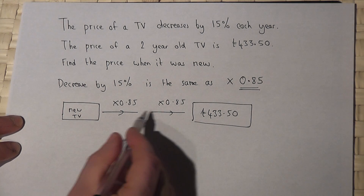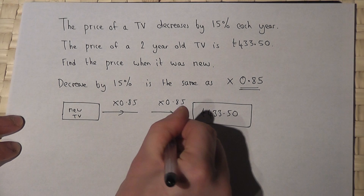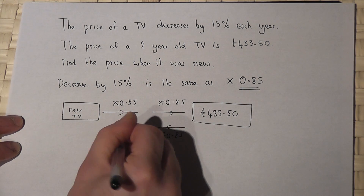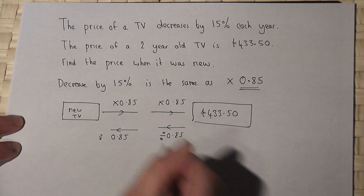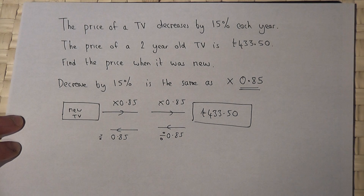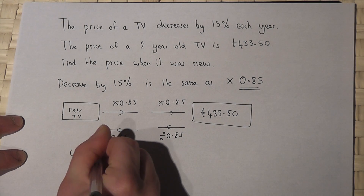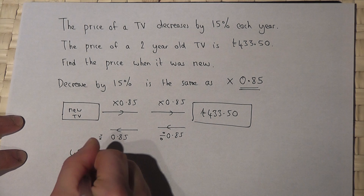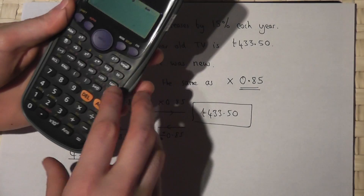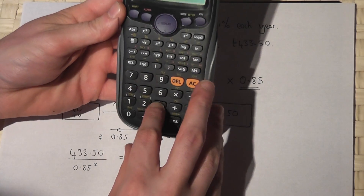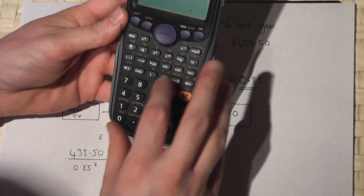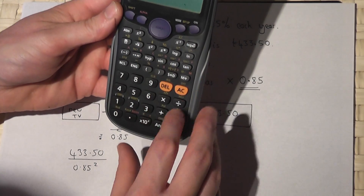To get back to the original price, we have to divide by 0.85 for every year. Because it was two years old, I must divide by 0.85 twice. This is the same as 433.5 divided by 0.85 squared. Using a calculator: 433.5 ÷ 0.85²...